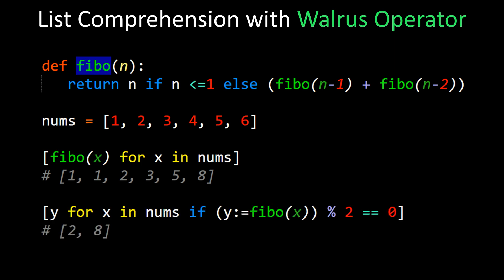Now if we wanted to also add a conditional, which is where the walrus operator comes in, we can compute fibo(x) and assign it to the variable y via the walrus operator's assignment expression, and then do the modulus 2 equals 0 check to keep just the even elements of the Fibonacci sequence.